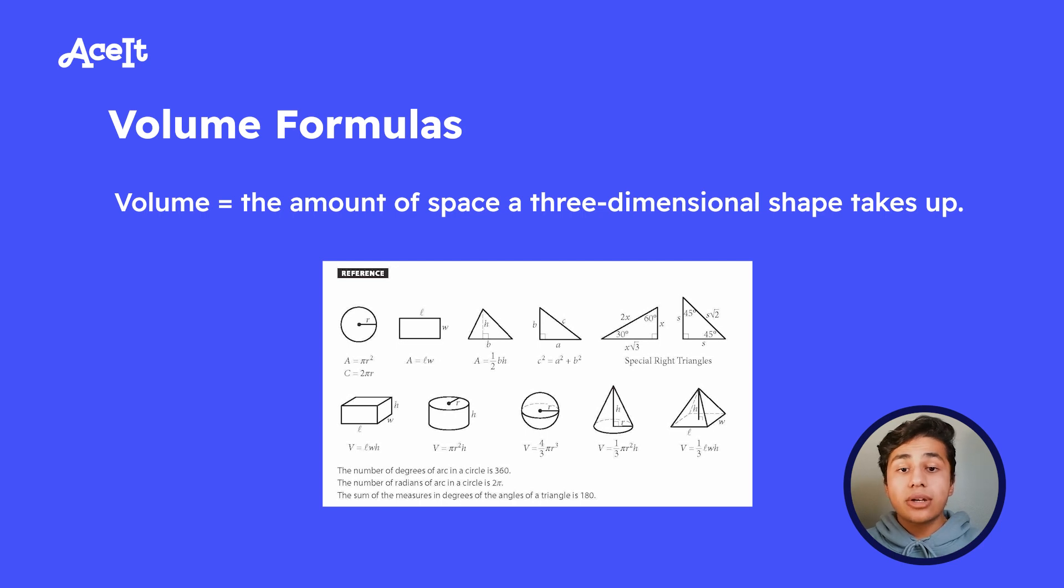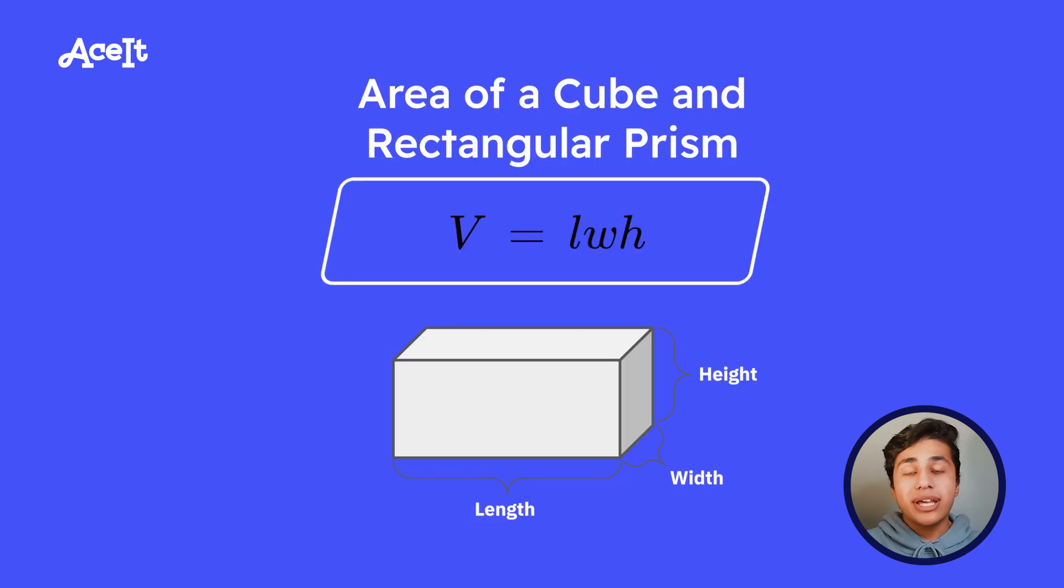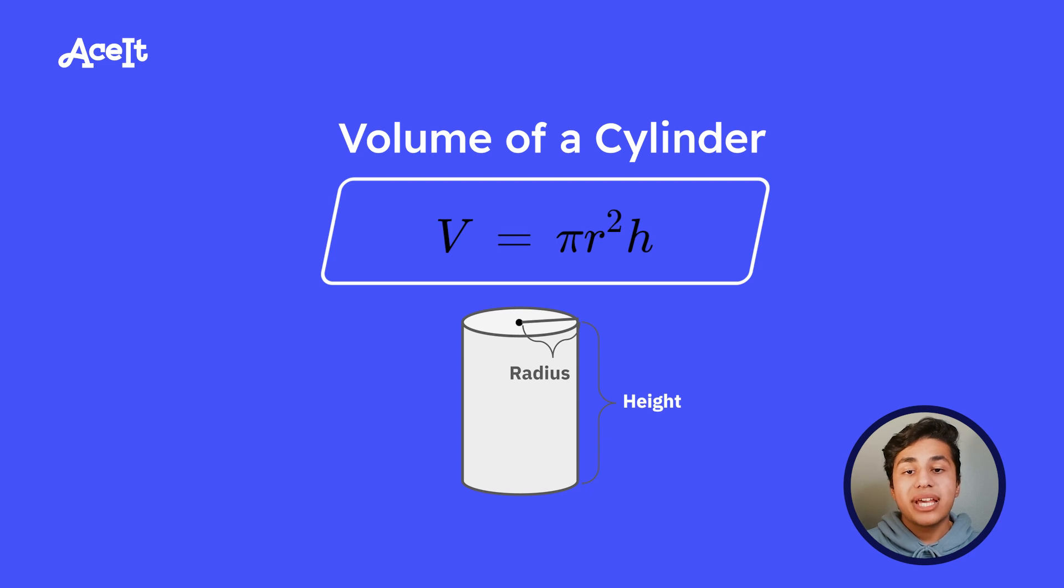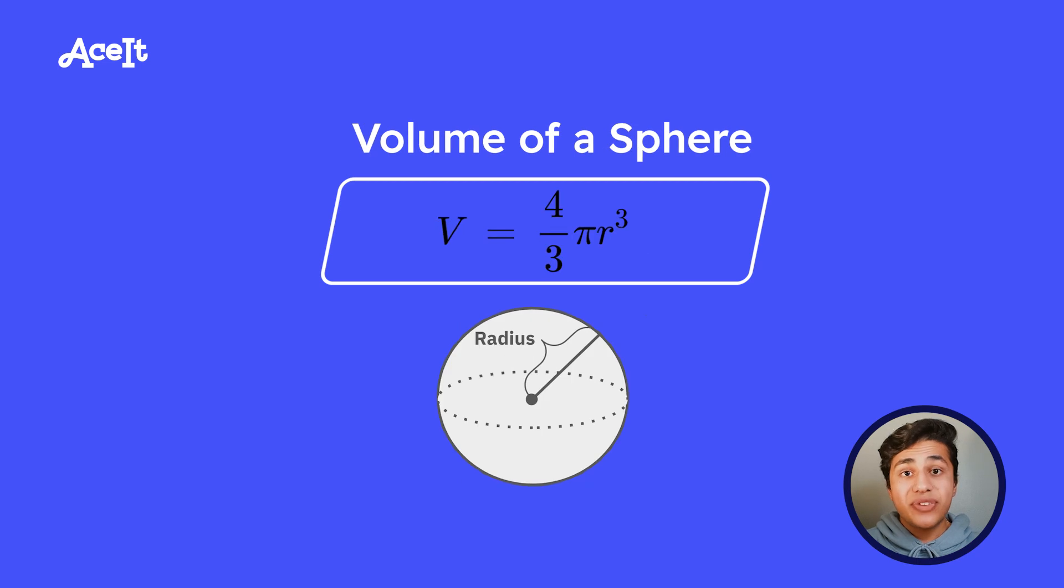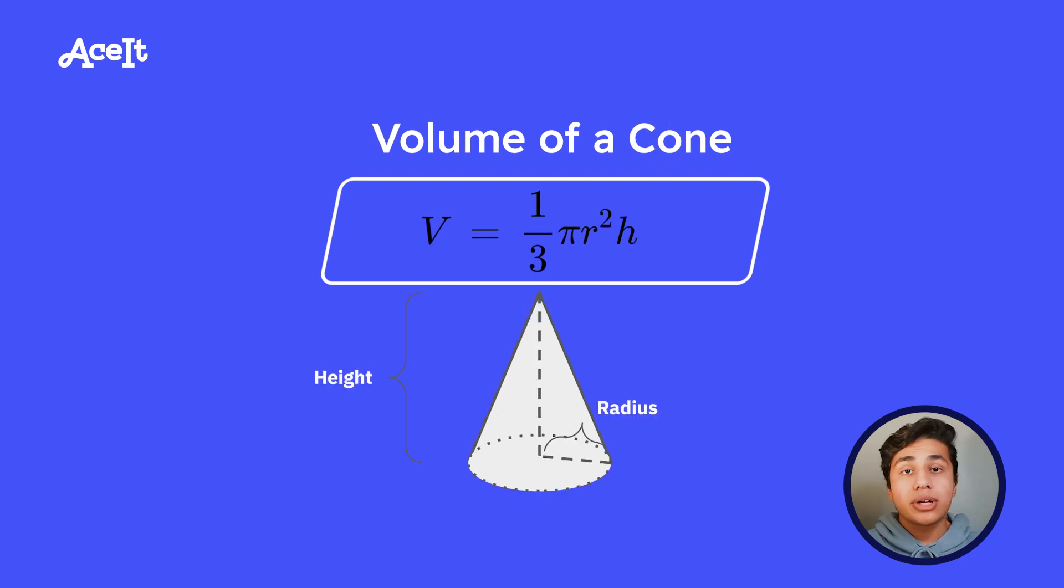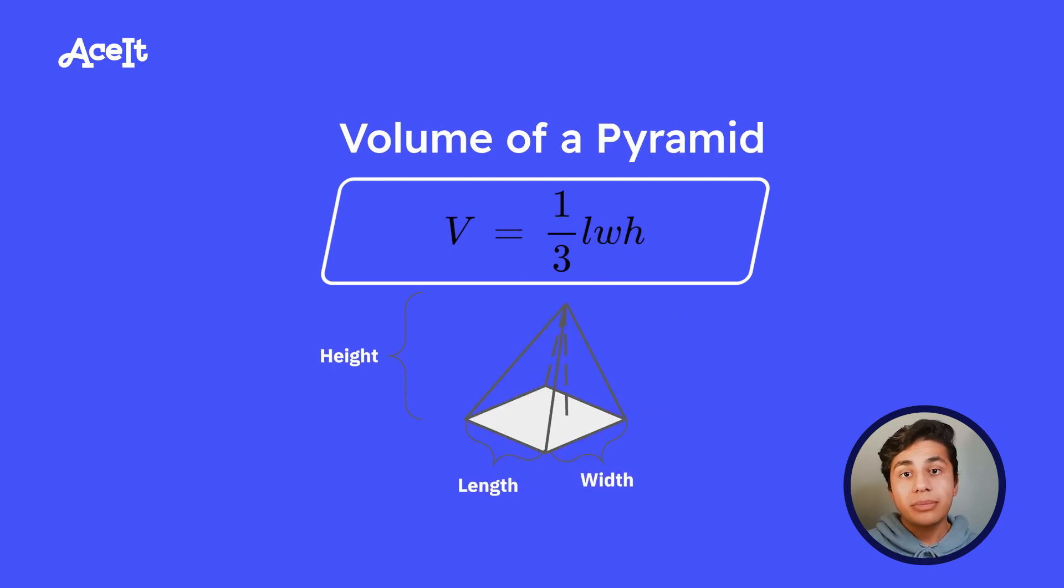So let's start off with rectangular prisms, whose volume is length times width times height. And then we have the cylinder, whose volume is pi r squared times its height. And then we have spheres with a volume of four-thirds pi r cubed. And then we have cones with a volume of one-third pi r squared times height. And then finally, we have the square pyramid, whose volume is one-third length times width times height.